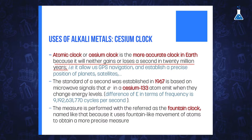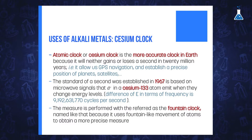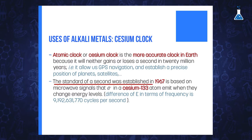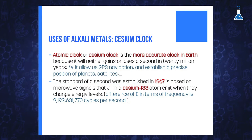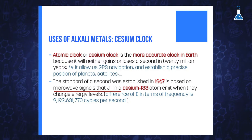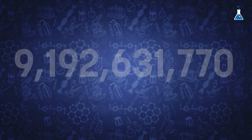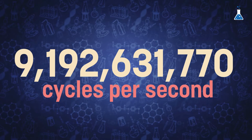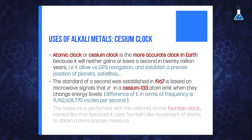This method improves upon early measurements based on the orbital period of the Earth. The rotation of the Earth on its axis is not reliable enough because it doesn't rotate at the same speed at all times. Without atomic clocks, GPS navigation would be impossible and we would not know precisely the position of planets and satellites. The standard of the second was agreed in 1967, and is based on the microwave signals that electrons in a cesium-133 atom emit when they change energy levels. The difference between the two levels is given in terms of frequency for this transition, and is exactly 9,192,631,770 oscillations.